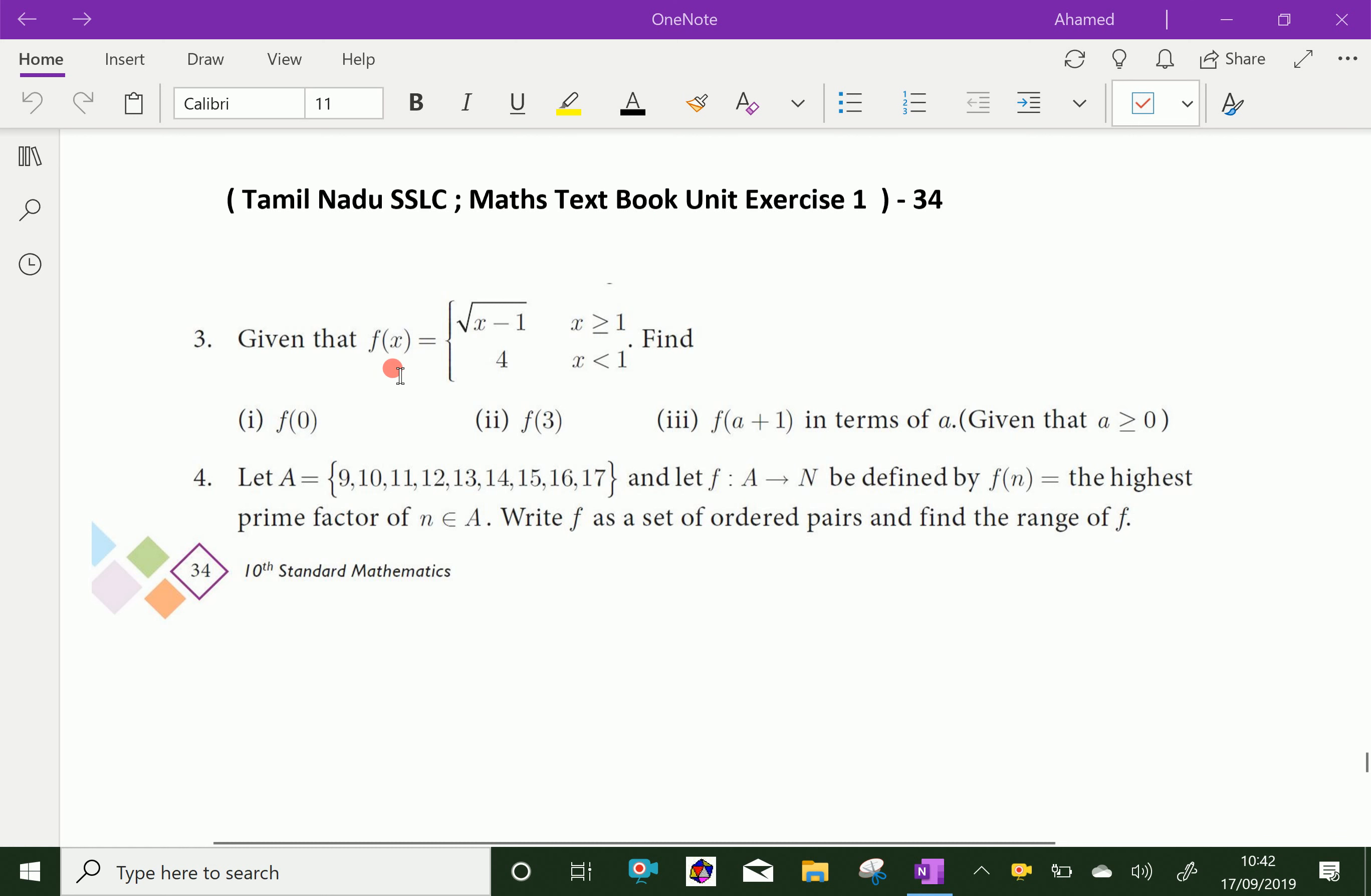Given that f of x equals square root of x minus 1 when x is greater or equal to 1, and f of x equal to 4 when x is less than 1, find f of 0, f of 3, and f of a plus 1 in terms of a.